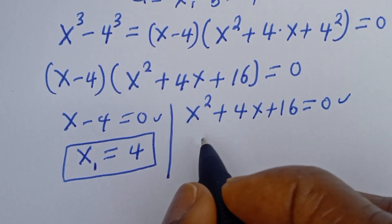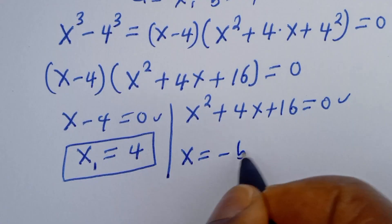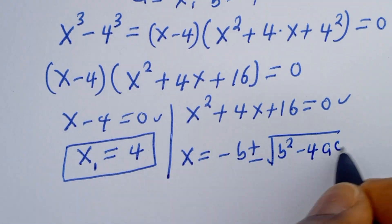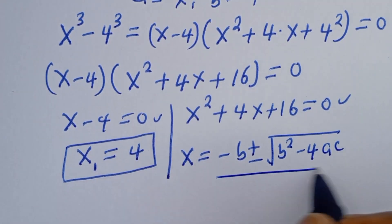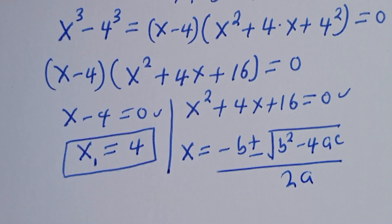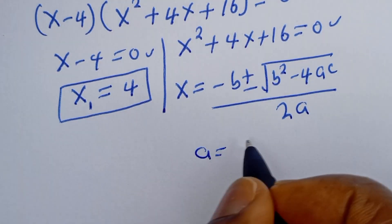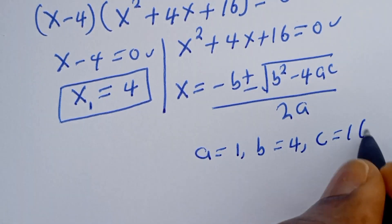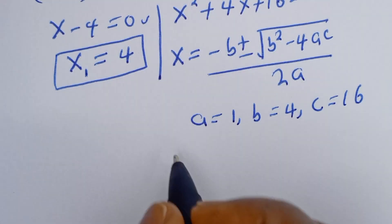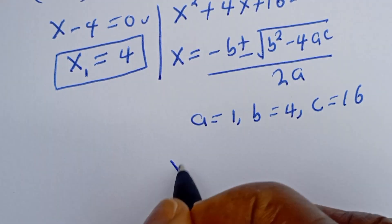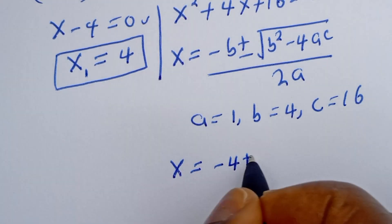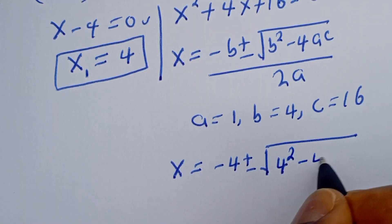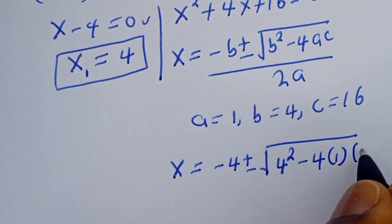From the second case, this is a quadratic equation. Using the quadratic general formula: s is equal to minus b plus or minus square root of b squared minus 4ac, all over 2a. Here a is equal to 1, b is equal to 4, c is equal to 16. Then s is equal to minus 4 plus or minus square root of 4 squared minus 4 multiplied by 1 multiplied by 16.